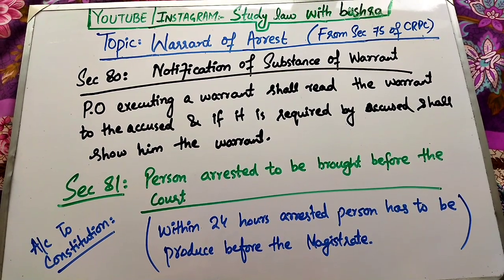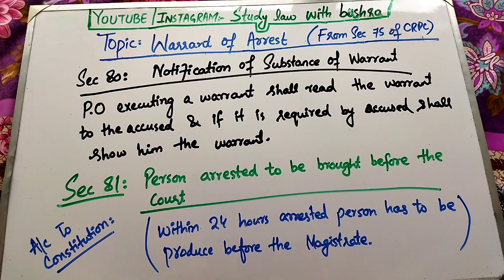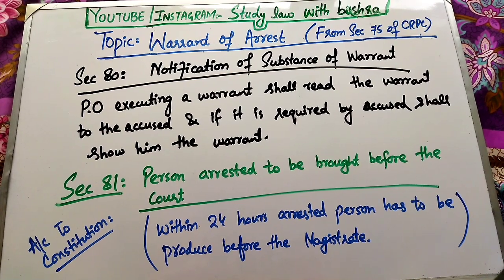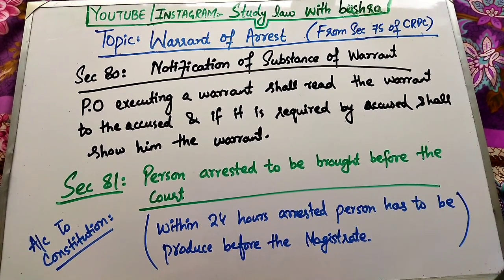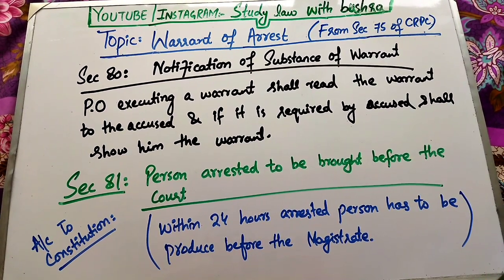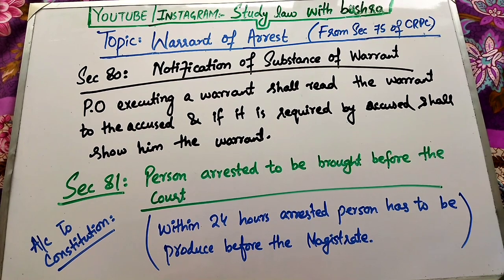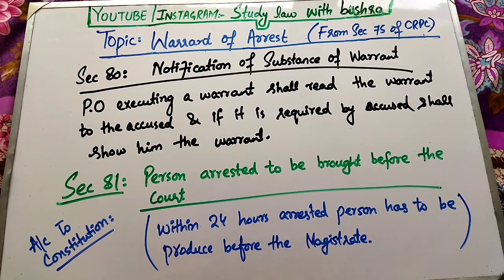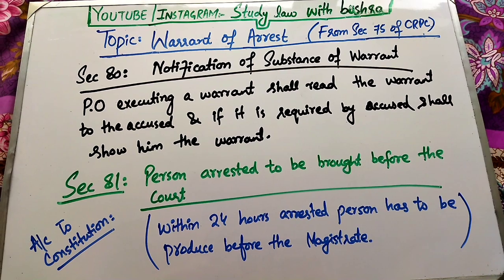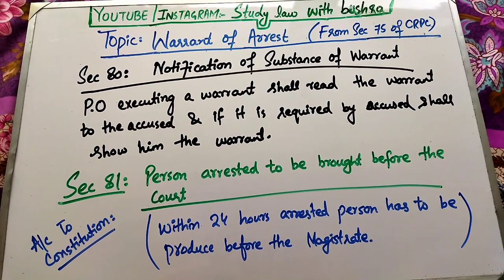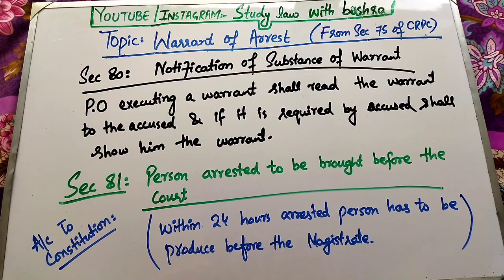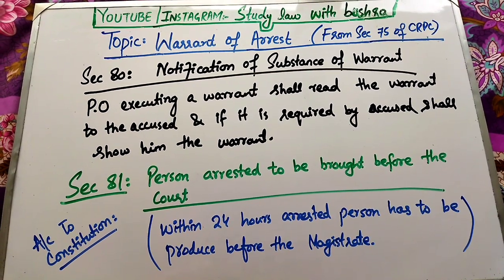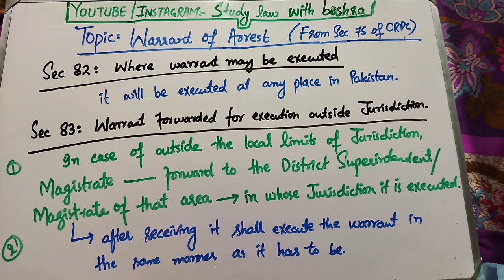Section 81 deal کرتا ہے Person arrested to be brought before the court. Section 81 کہتا ہے کہ warrant of arrest execute کر لینے کے بعد آپ نے اس شخص کو court کے سامنے پیش کرنا ہے. Constitution of Pakistan کے تحت، جب کبھی کسی بندے کو arrest کیا جائے تو within 24 hours police officer has to produce the arrested person before the magistrate.